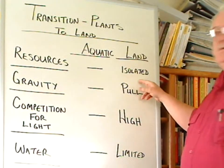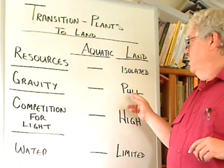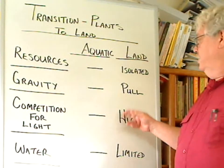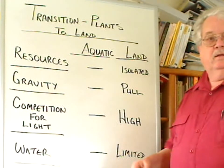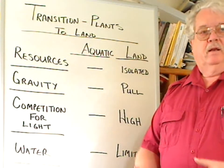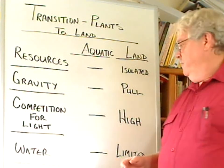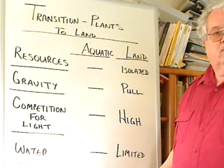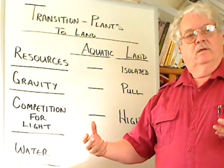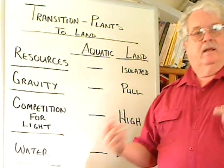Whereas on land, the resources are isolated between the soil and the air. There is a constant pull of gravity tending to pull the plant parts down. There is high competition for light, so those organisms that are right at the surface are going to compete with those that can get higher up and shade those out — so there's a tendency to grow taller. And water is limited in availability, so there's a need to conserve water as well as to gather it. We'll look at how each one of these is covered by different kinds of new adaptations of structures on plants in the next video.